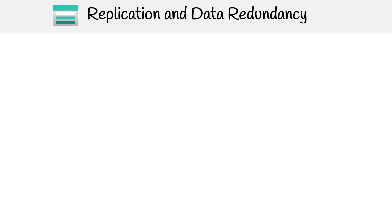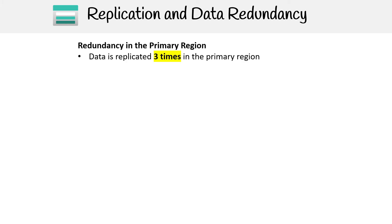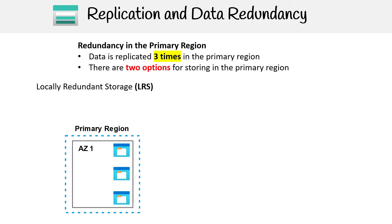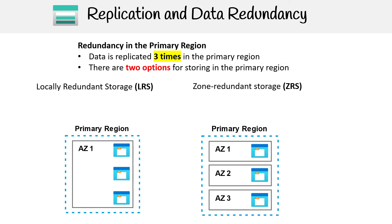What we're going to do is take a closer look at the replication type, starting with the primary region redundancy. For this tier, all the data is going to be replicated at least three times in the primary region. We have two options: LRS and ZRS. By the graphic, you can tell that they're slightly different.